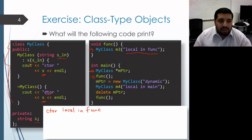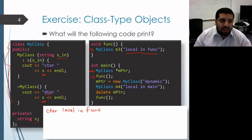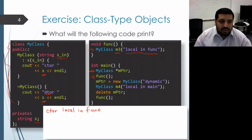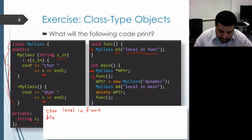Proceeding past that, we get to the end of the function. When the function returns, all of the local variables die, and if they are of class type, their destructor needs to run. Here we do have the m3 object that's of class type, so its destructor runs and that prints out DTOR and then the string that was passed to the constructor, which was "local in func".